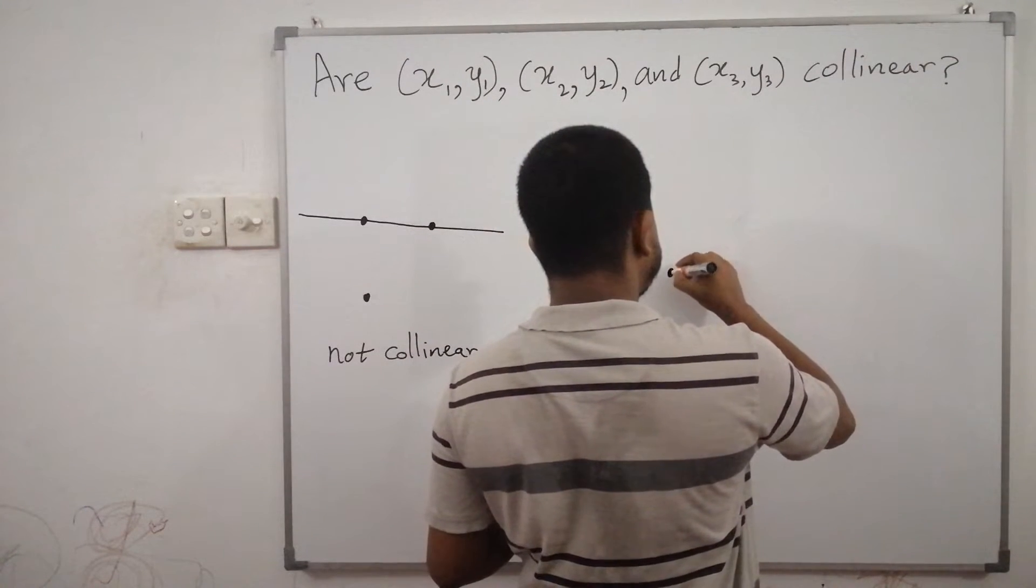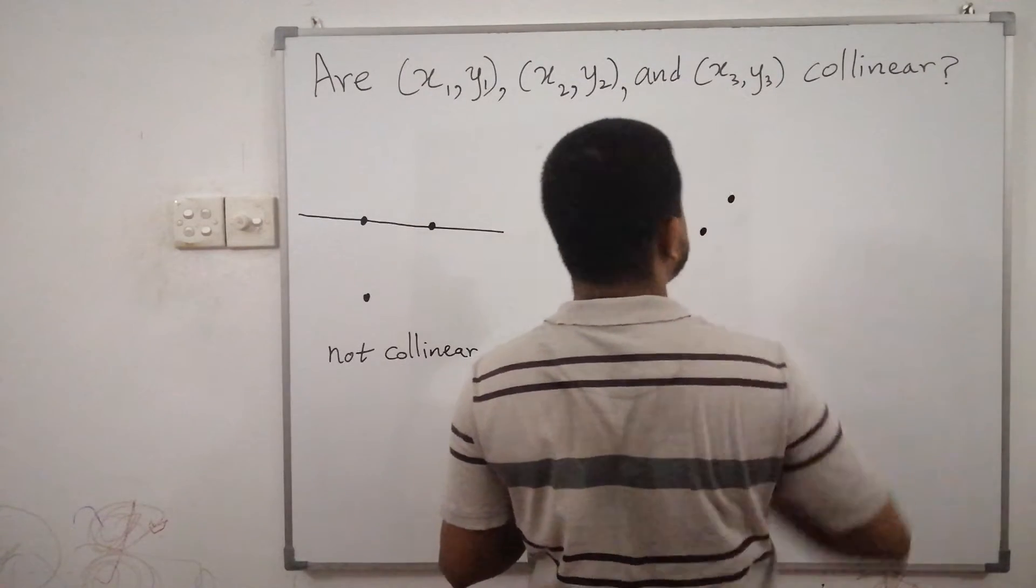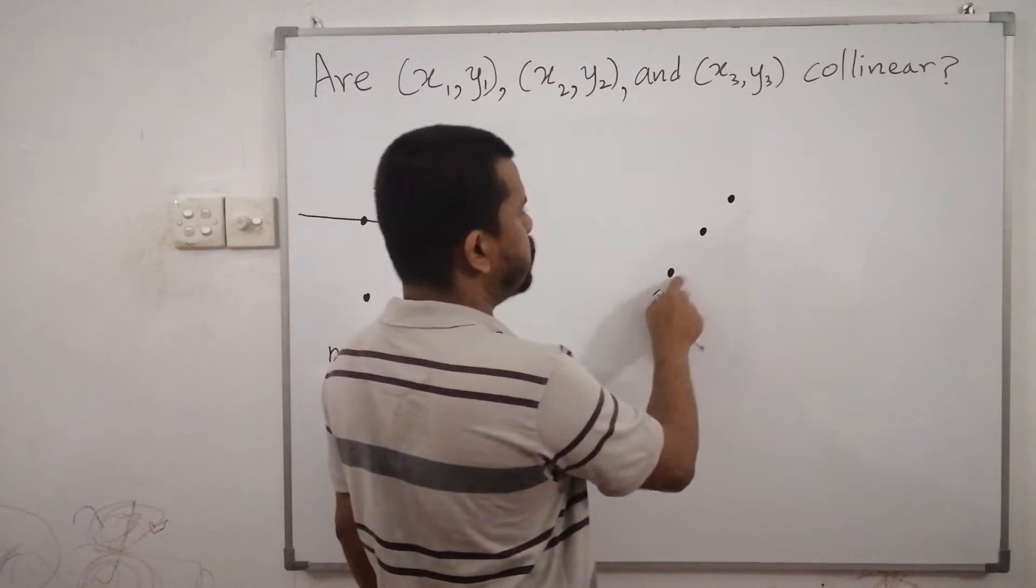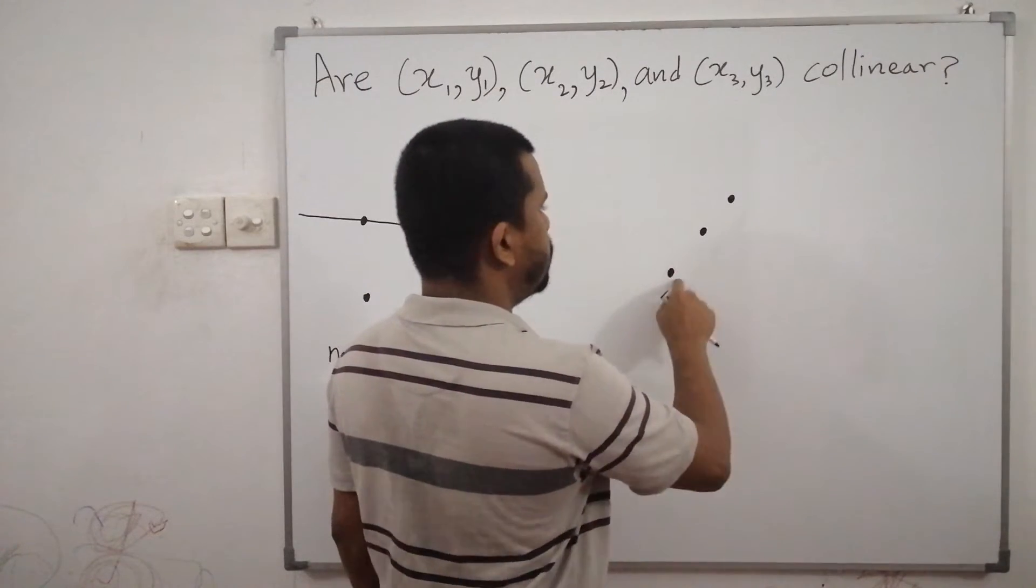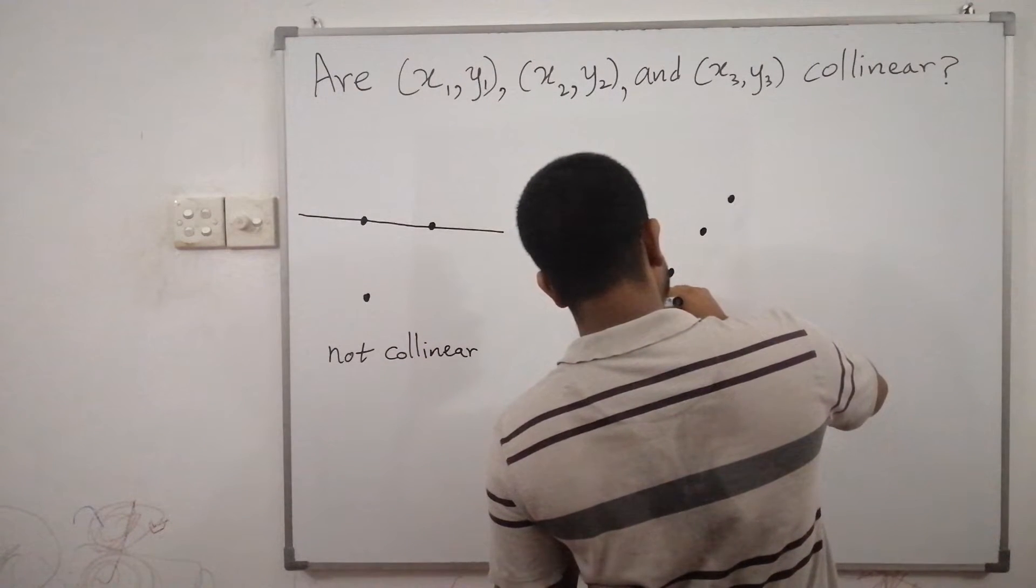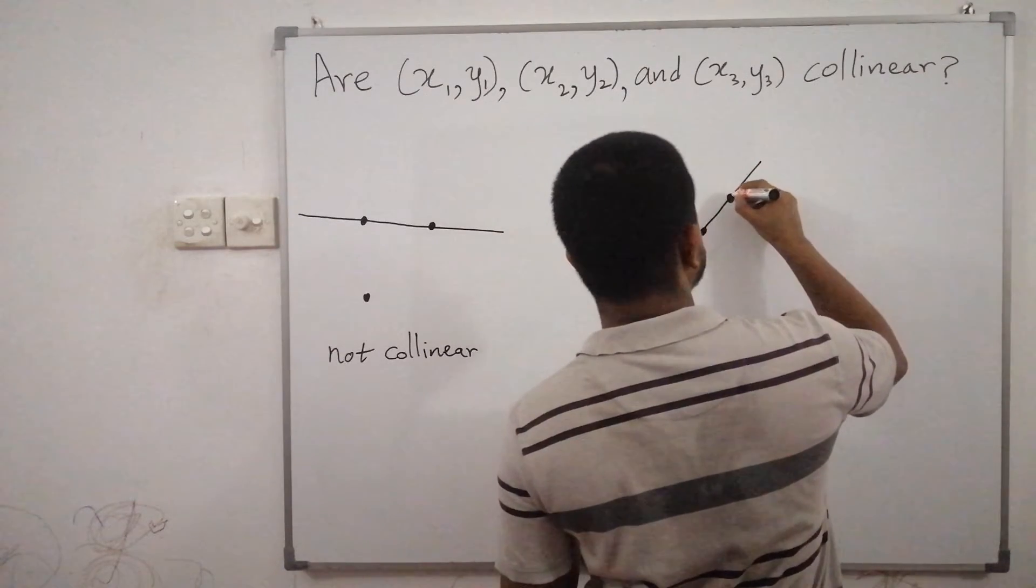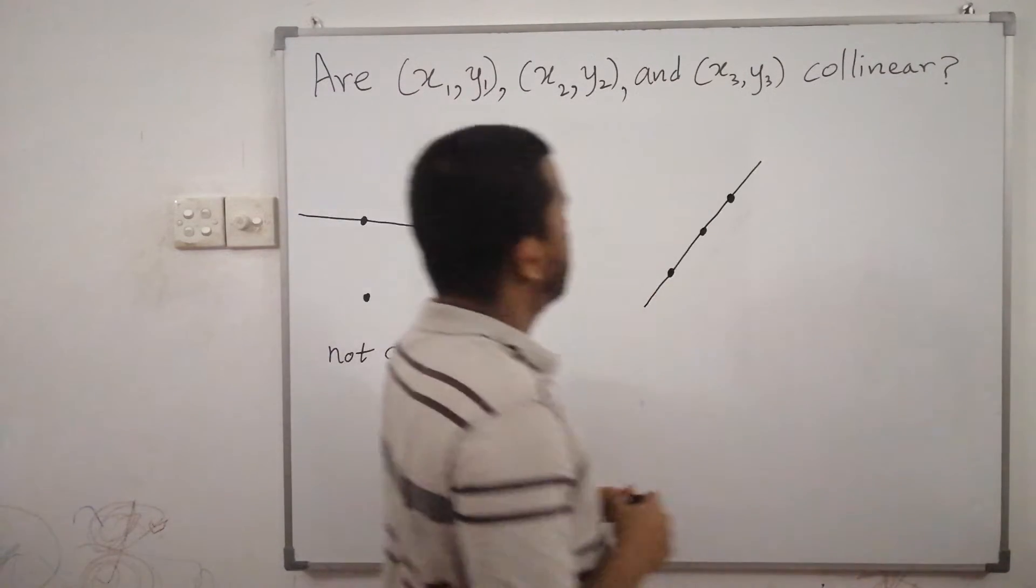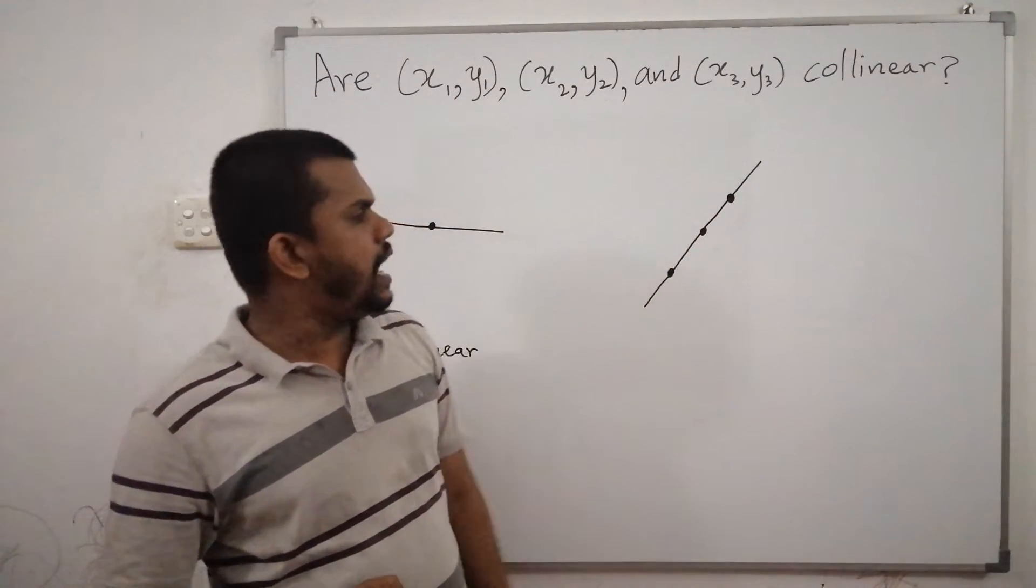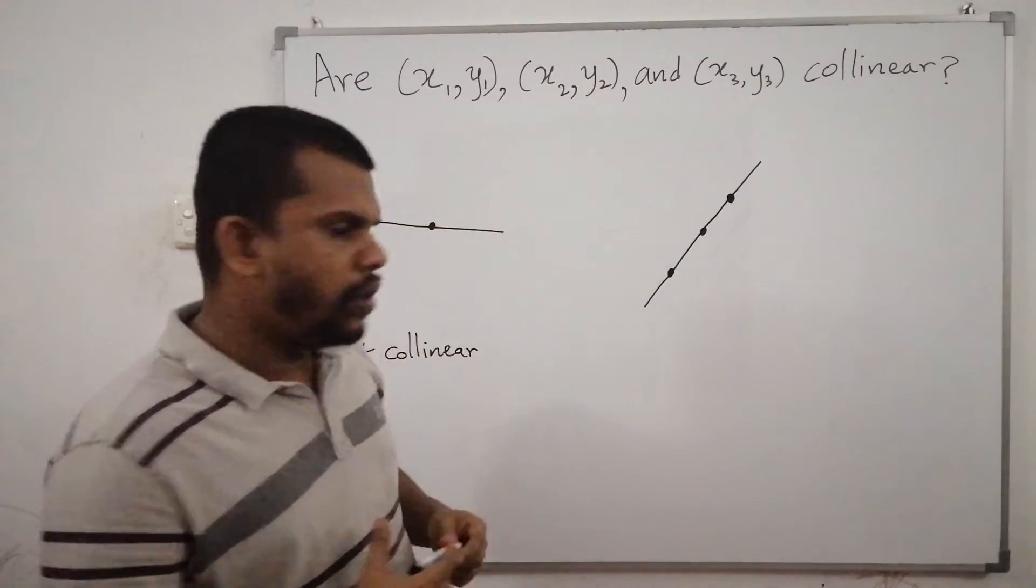Now let's consider these three points and we draw a straight line through these two points. Then the other point is on this line, therefore we say that these three points are collinear.